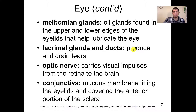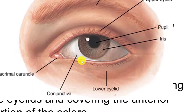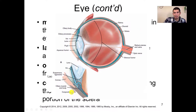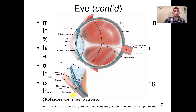The conjunctiva is the mucous membrane lining the eyelid. This is oftentimes what gets inflamed when we have pink eye. Here they're pointing it out as the general area of the white of the eye or the sclera, but really you're not going to see it until it gets inflamed. There is a better pointer here — it's this tiny layer that covers the sclera, and when it gets inflamed it becomes reddened and visible on the outside.